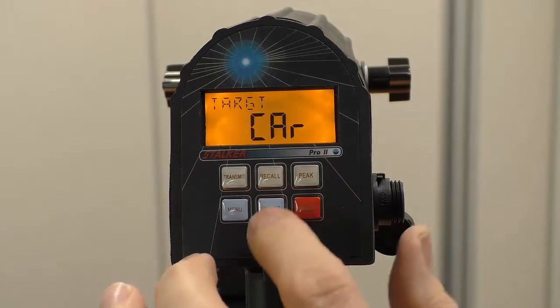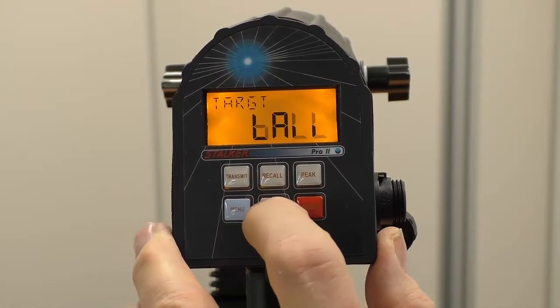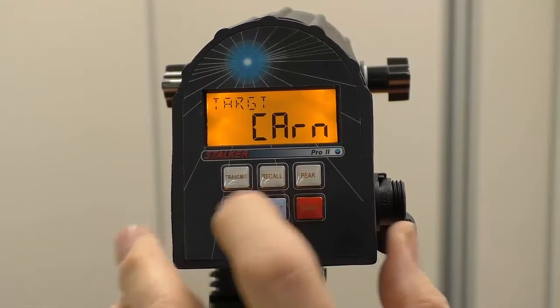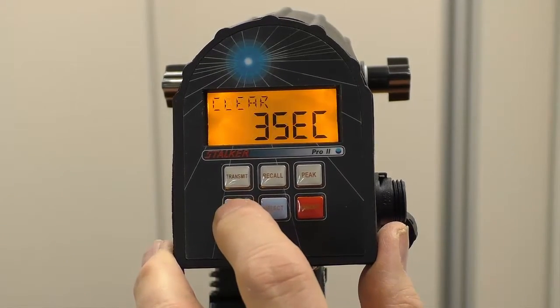Now in this case the target is set to car. We've got other targets. We've got tennis, we've got ball or carnival. In this case we're going to leave it at car. Now I hit the menu key to jump again.